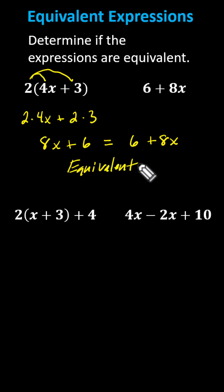Next, we have 2 times the quantity x plus 3 plus 4, and 4x minus 2x plus 10.